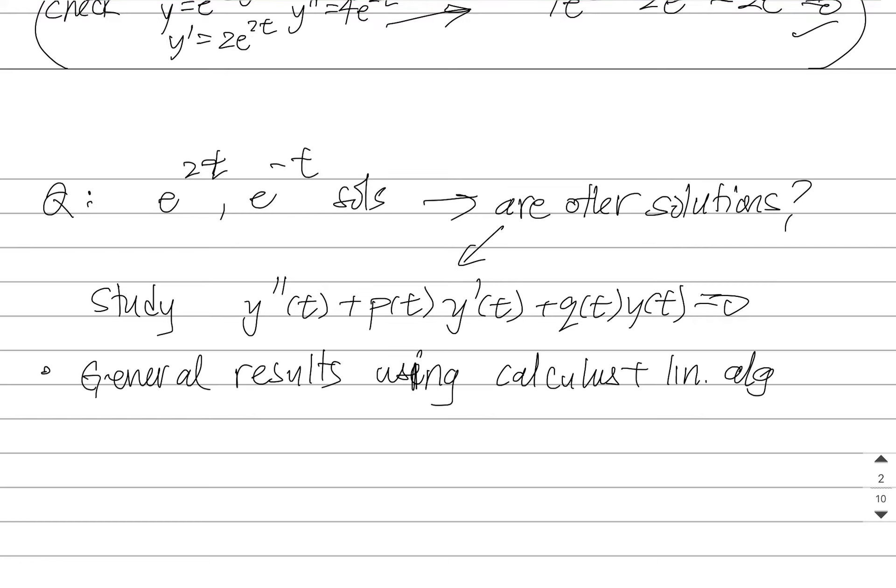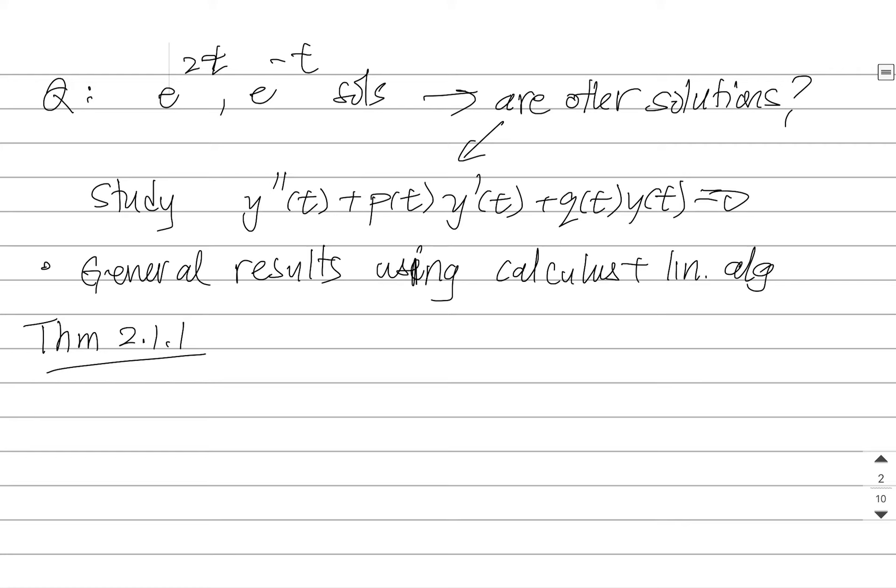So the first result here is what is referred to as theorem 2.1.1. It's in the textbook as theorem 2.1.1 and on the sheet that I've attached. Basically, it says, look, if Y1, Y2 solve this differential equation, then this linear combination is also a solution.